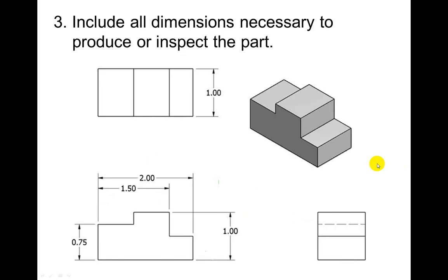The third one: include all dimensions necessary to produce or inspect the part. We're missing something here. We do not know this dimension, so this is actually considered incorrect.